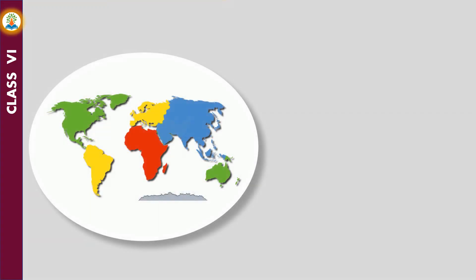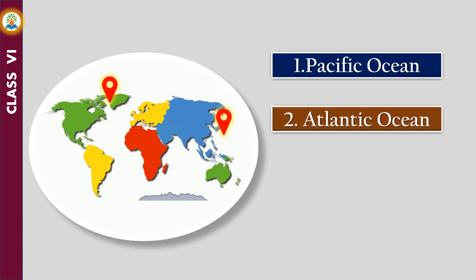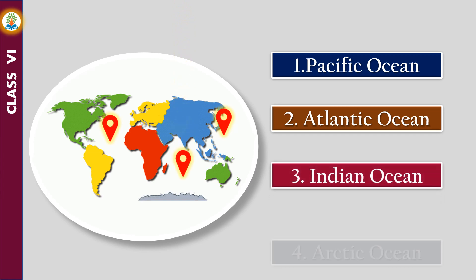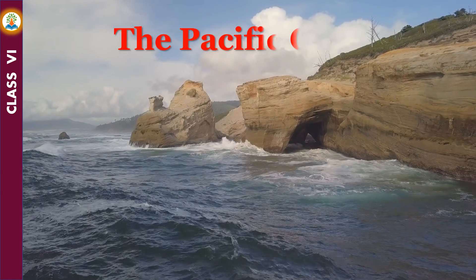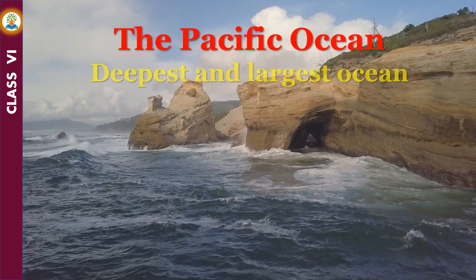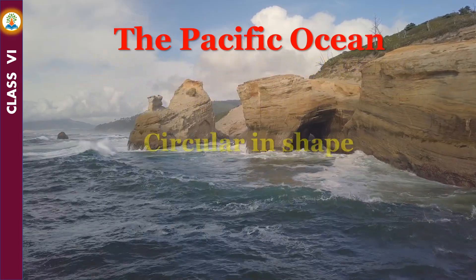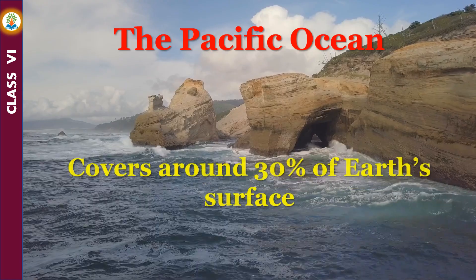There are four major oceans. According to size, they are the Pacific Ocean, Atlantic Ocean, Indian Ocean, and Arctic Ocean. The Pacific Ocean is the deepest and largest ocean. It is circular in shape and covers around 30 percent of the earth's surface.